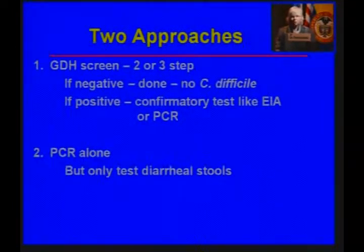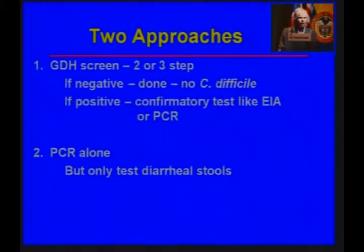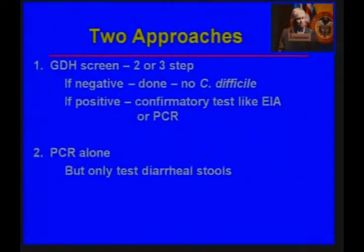The two common approaches now are to test for a common antigen called glutamate dehydrogenase, or GDH. If this is negative, the patient probably does not have C. difficile. If it's positive, you have to do some sort of a confirmatory test, because this antigen is not specific for C. difficile — it's a clostridial antigen.